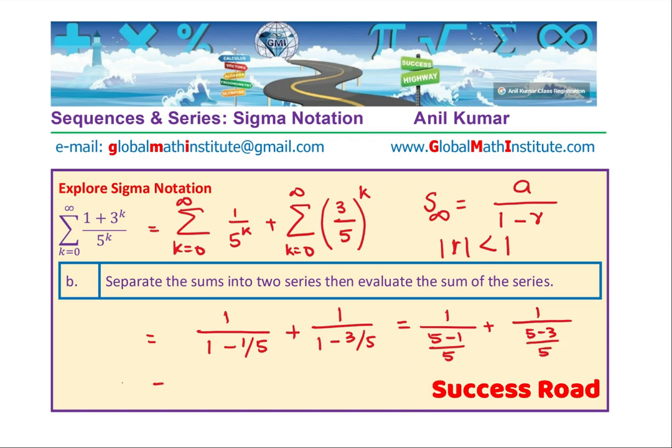Or is equal to taking 5 on the top, we have 5 minus 1 as 4, plus 5 over 5 minus 3 as 2, which gives us 4 as a common denominator, 5 plus 10, or 15 by 4. You see that? So that is how we can find the sum of this particular summation.